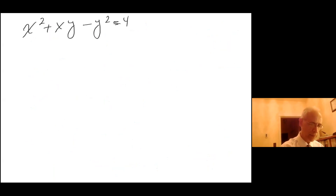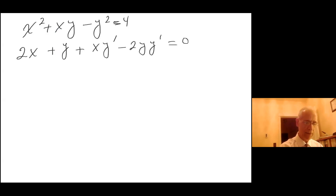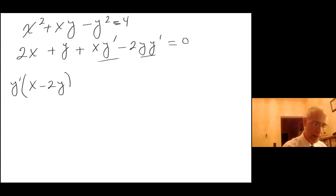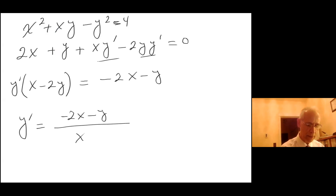So I get 2x plus, using the product rule on x times y: the derivative of x is 1 times y, plus x times y prime, minus 2y times y prime equals 0. I have y prime here and here, so factoring that out I get y prime times (x minus 2y), and everything else gives minus 2x minus y.